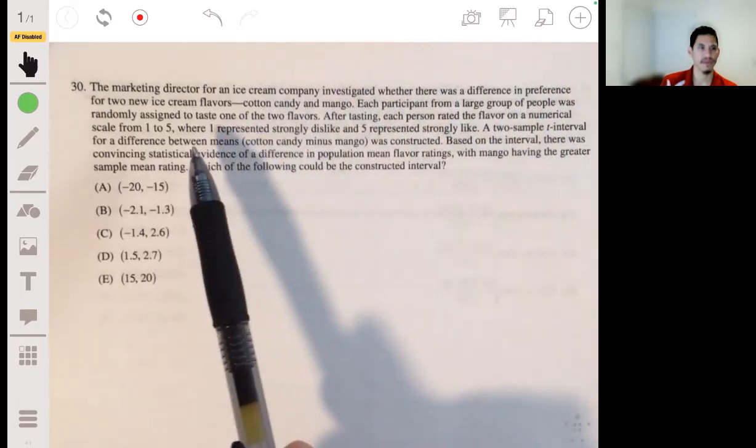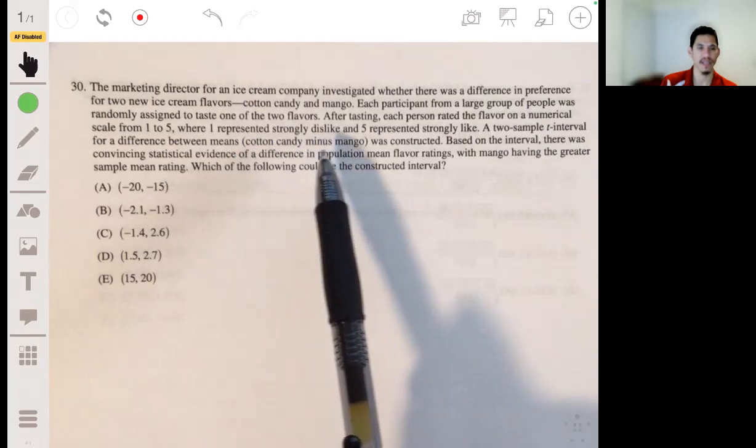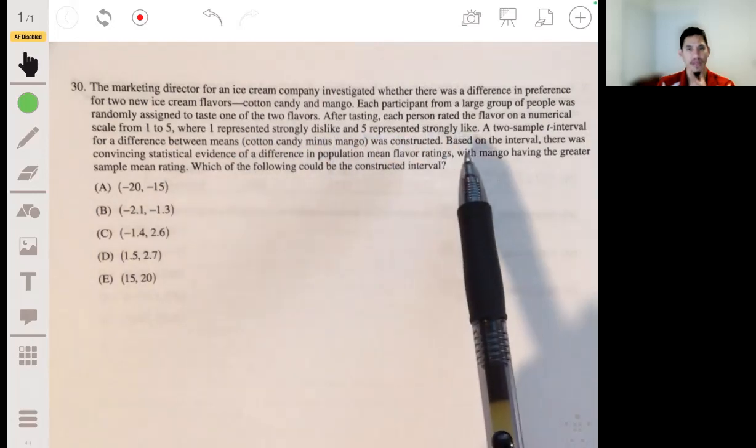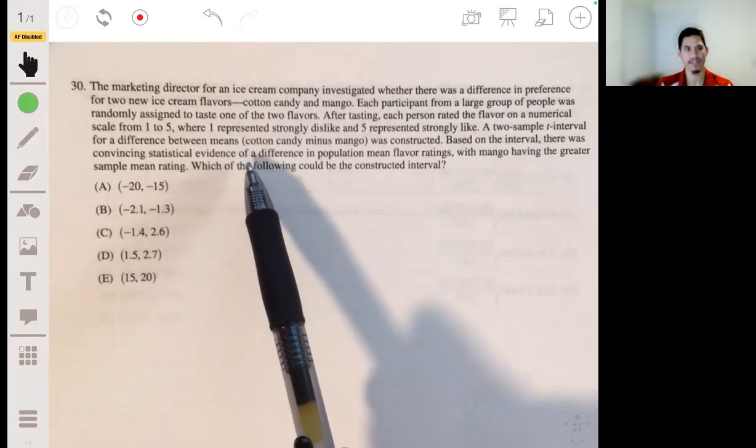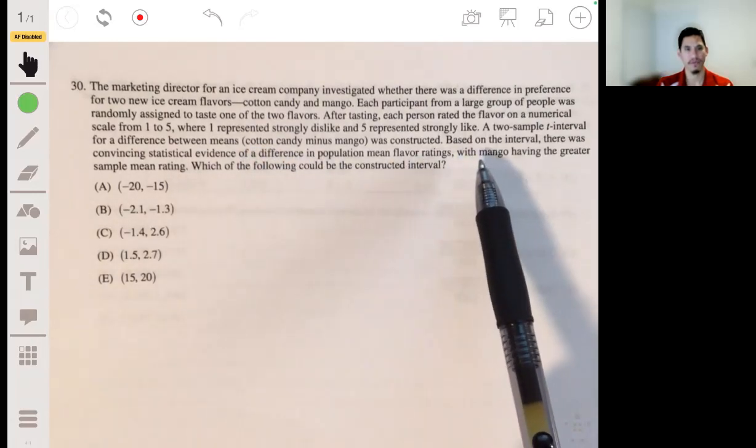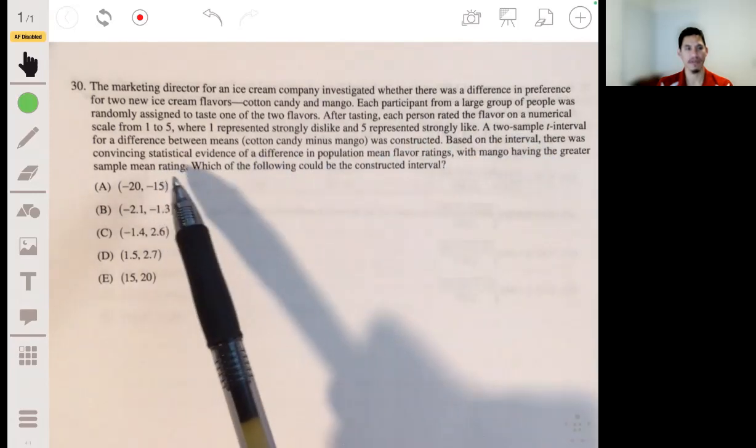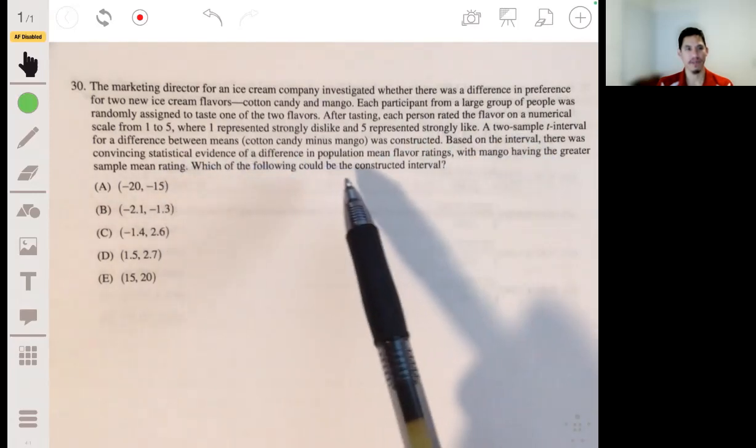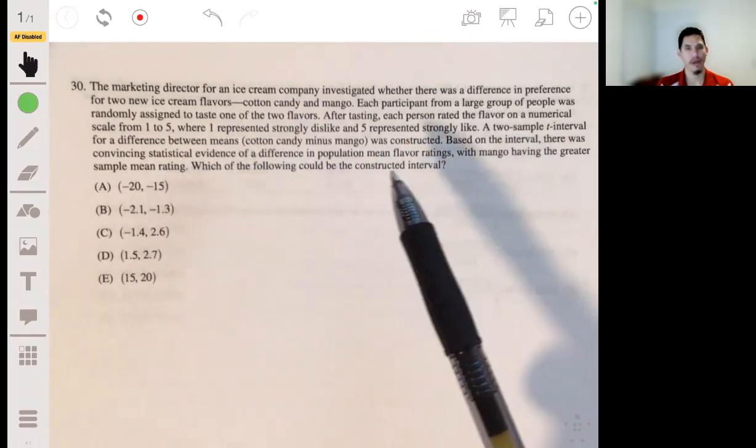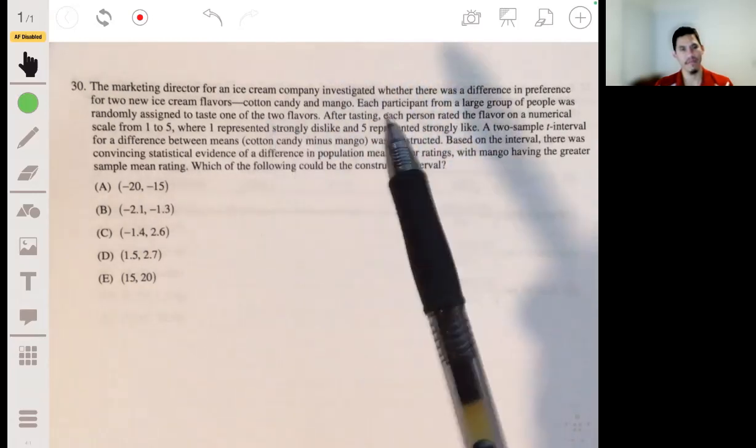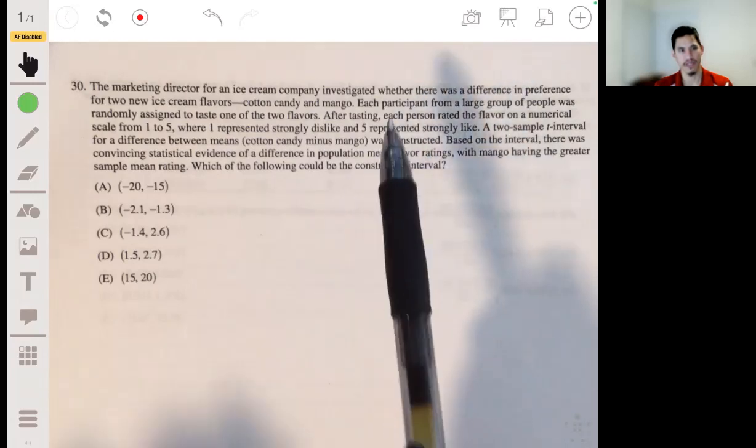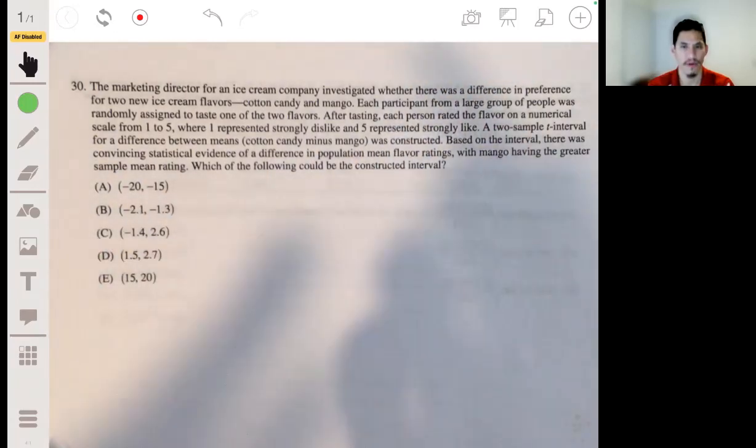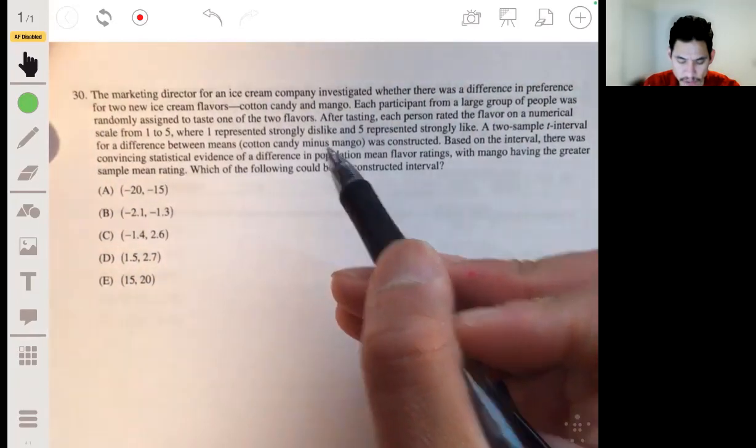Where one represented strongly dislike and five represented strongly like. A two sample T interval for the difference between two means, coffee and candy minus mango, is constructed. Based on that interval, there was convincing statistical evidence of a difference in population mean flavor ratings. This is a lot of wording and the key is to construct it into the proper difference of means.